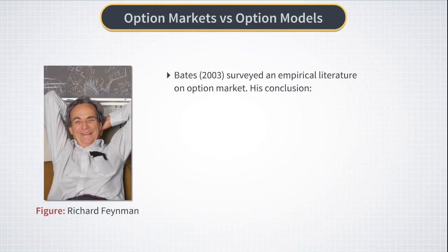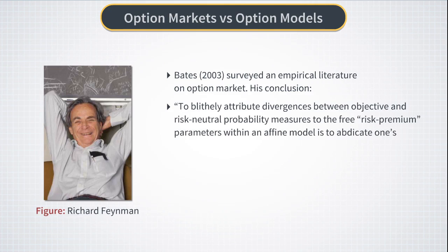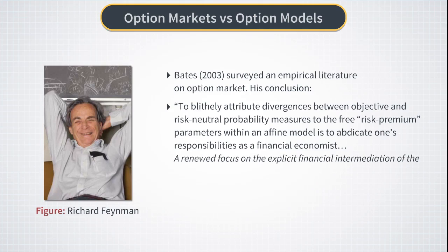In 2003, Bates surveyed the empirical literature on option markets. He concluded that the risk-neutral methods of option pricing that extend the Black-Scholes model cannot fully capture, let alone explain, the empirical properties of option prices. He said: to obliterally attribute divergences between objective and risk-neutral probability measures to free risk premium parameters within an affine model is to abdicate one's responsibilities as a financial economist. A new focus on the explicit financial intermediation of the underlying risk by option pricing market makers is needed.